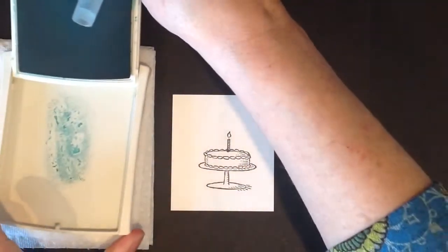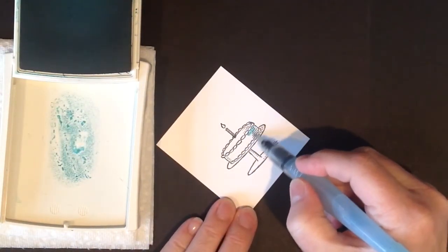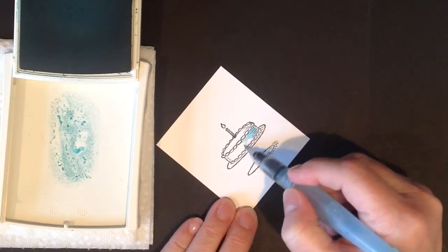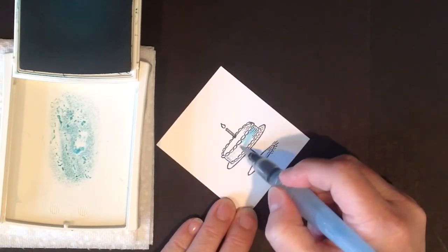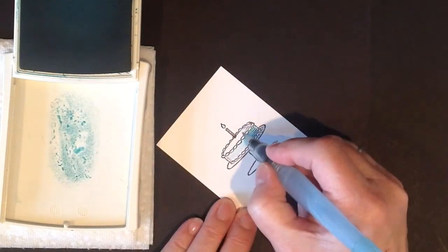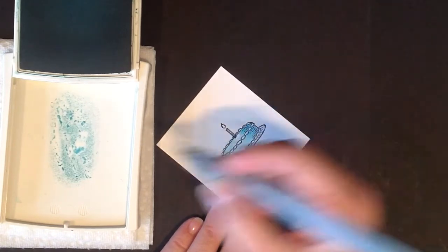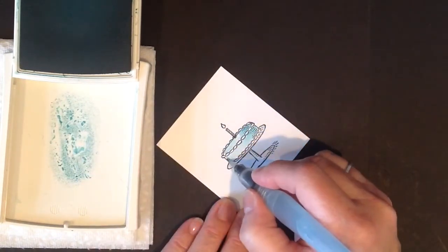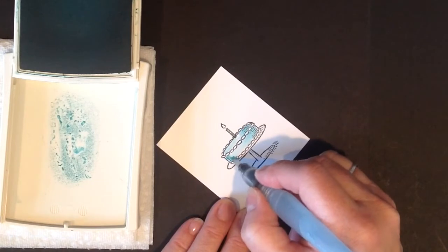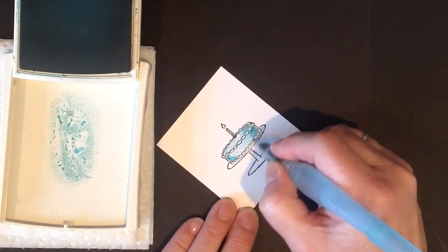The Stampin' Up ink pads are designed to create a little well of ink in them so you can use it like a little paint palette. I'm just going to take my aqua painter and go across here like this. The thing about watercoloring is it's not an exact art. You want to leave a little white. It's called omitting for shading. Where the stamp has these darker images, the lines show you where the shading is supposed to be, so you can go in and just add a little bit more ink.